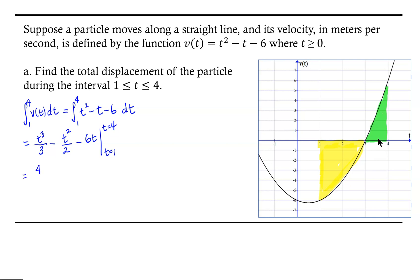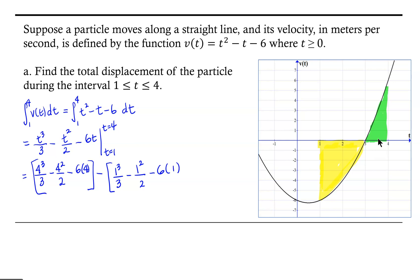Substituting in, we get (4³/3 - 4²/2 - 6·4) minus (1³/3 - 1²/2 - 6·1). That gives us 64/3 - 8 - 24, minus 1/3, and distributing the minus sign we get minus 1/3, plus 1/2, plus 6.